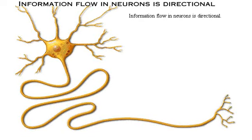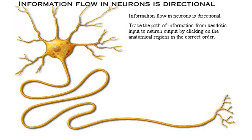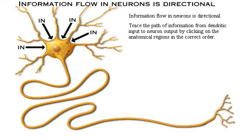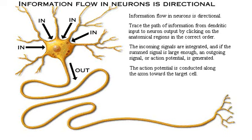Information flow in neurons is directional. Trace the path of information from dendritic input to neuron output by clicking on the three anatomical regions in the correct order. The incoming signals are integrated, and if the summed signal is large enough, an outgoing signal, or action potential, is generated. The action potential is conducted along the axon toward the target cell.